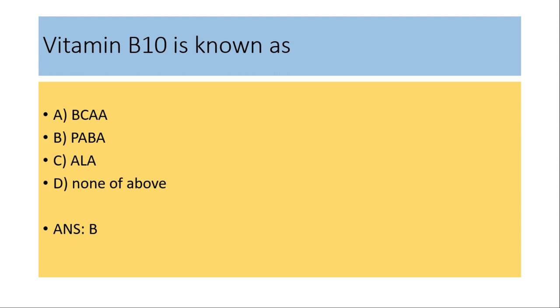Vitamin B10 is known as: (a) BCAA, (b) PABA, (c) ALA, (d) none of these. The answer is (b) PABA. PABA means para-amino benzoic acid. BCAA means branched-chain amino acids.